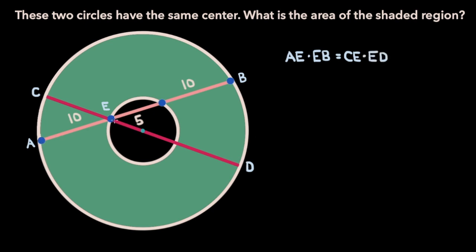We know line segment AE is of length 10, and that line segment EB is of length 5 plus 10, so 15. But now what about the length of CE and ED? Well, for starters, we know that the length from point E to the center of both circles is just the radius of the outer circle — let's call that uppercase R. And similarly, we know that the line segment from point E to the center of both circles is just the radius of the inner circle, which we can call lowercase r.